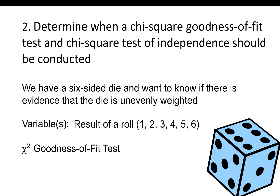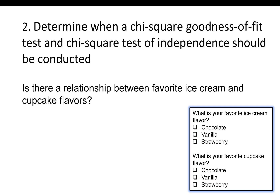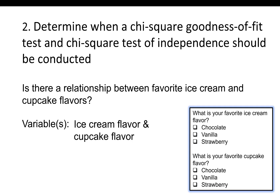One more example: is there a relationship between favorite ice cream and cupcake flavors? Participants were asked two questions: what is your favorite ice cream flavor, and what is your favorite cupcake flavor? Those two questions represent two variables, both categorical. To determine if there is evidence of a relationship between two categorical variables, we should conduct a chi-square test of independence.